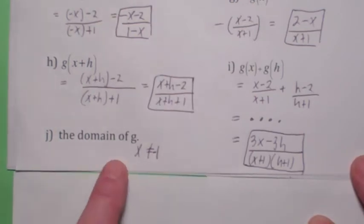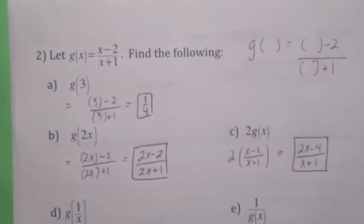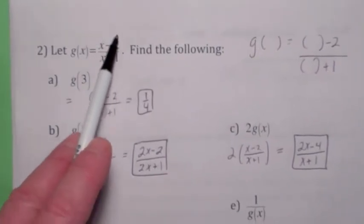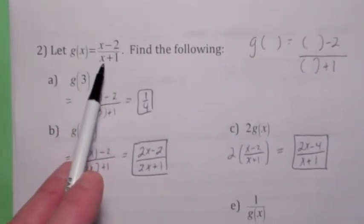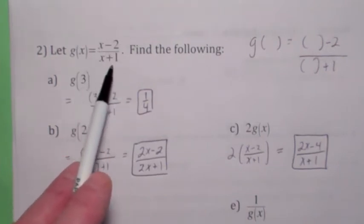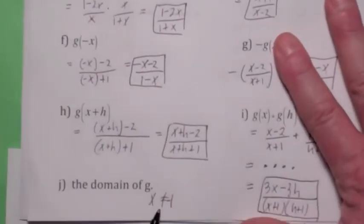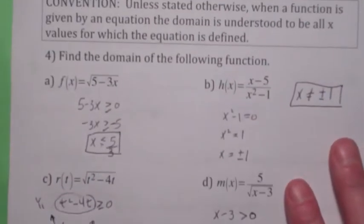By the way, what's the domain of this function? Go back up to the top. The domain of this function is the set of all x for which the equation is defined. In this case, this is a rational expression, it's defined everywhere except where the denominator is 0. So x plus 1 cannot equal 0. So x cannot equal negative 1. Let's keep on going here.